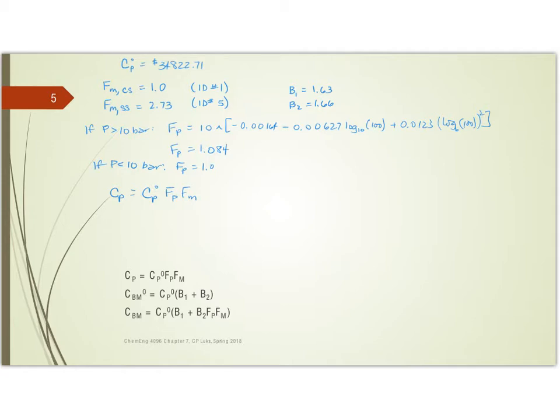C sub P is C sub P0 times Fp times Fm. The bare module cost, it's going to be C sub P0 times B1 plus B2 if it's just carbon steel at one atmosphere, or B1 plus B2 times Fp times Fm for a different pressure or material. So, let's now use these and run these calculations for our various cases.